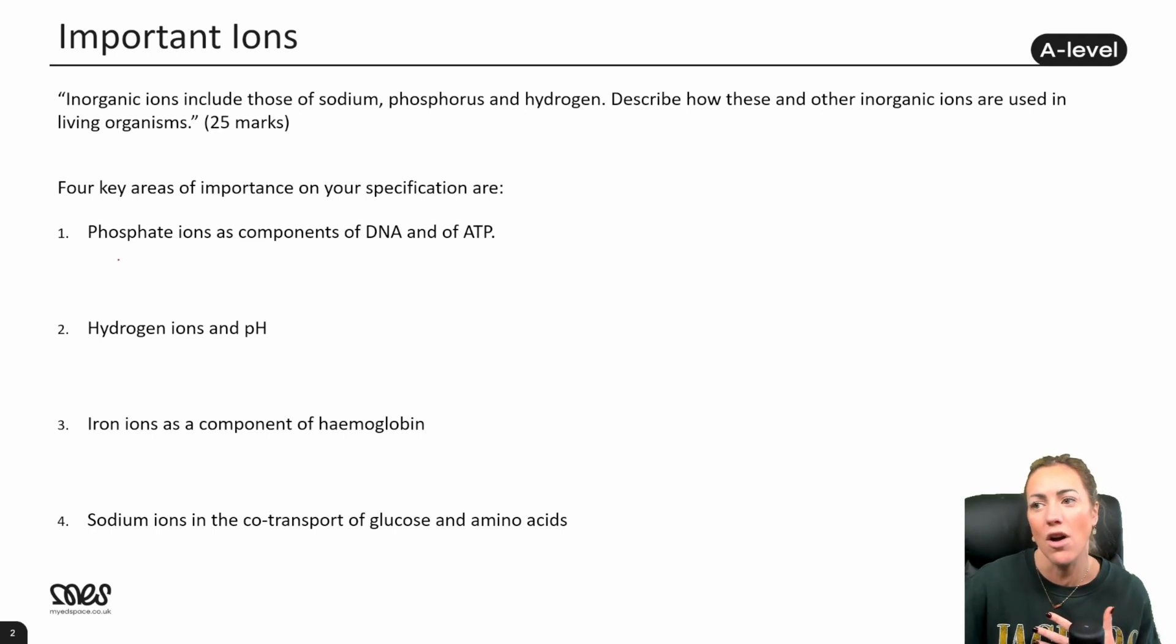We could do a paragraph on phosphate ions because phosphate ions are important components of DNA and RNA, and they're also really important in terms of ATP. So potentially this is actually two different paragraphs. You could talk about the phosphate ions in the nucleotides of DNA and RNA and forming the sugar phosphate backbone. You could also talk about the structure of ATP and the hydrolysis of ATP to release energy, but also potentially the use of that inorganic phosphate to then phosphorylate other substances and make them more reactive, like we see at the start of respiration in glycolysis.